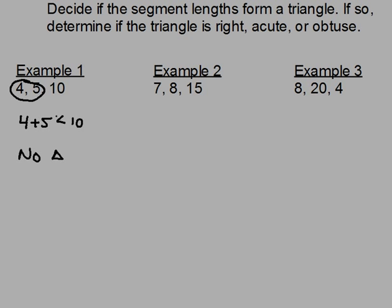For example two, I've got side lengths of seven, eight, and fifteen. Seven and eight are my smallest sides. Here's a tempting mistake: seven plus eight equals fifteen, and people might think that forms a triangle. But the triangle inequality specifically states the sum of the two smallest sides has to be greater than the third side — not equal to it. So again, I have no triangle with those side lengths.